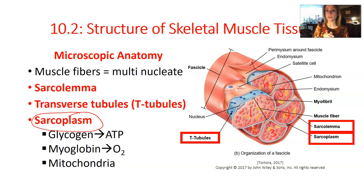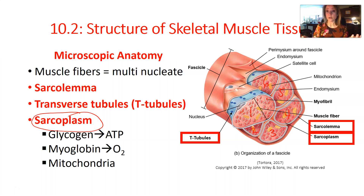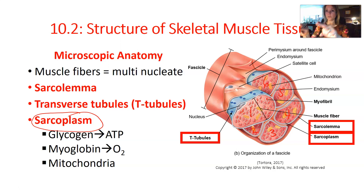The sarcoplasm of a muscle cell contains key components needed for contraction. It is crowded with mitochondria — the powerhouses that generate ATP. It also contains myoglobin, which carries oxygen, because aerobic respiration — the most efficient way to generate ATP — requires oxygen. The sarcoplasm also contains glycogen, which can be broken down into glucose, the fuel used in aerobic respiration to generate ATP.